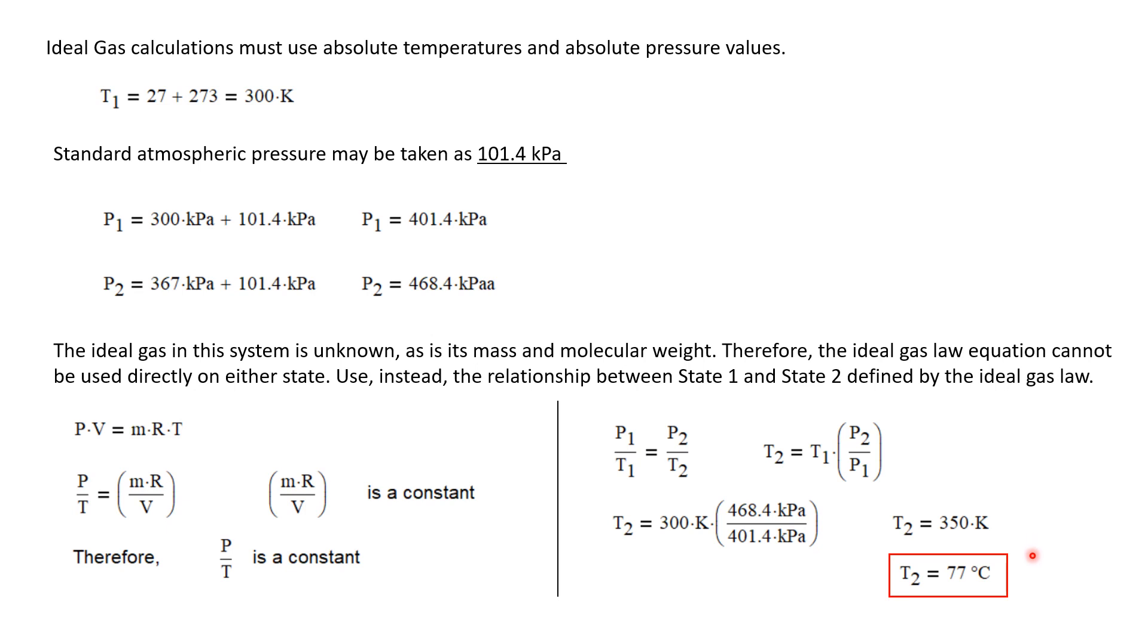But we were asked to solve the problem in degree C, so I'll subtract 273. The temptation here is to solve this equation looking for T2 in degree C by putting T1 in degree C. And because the gauge pressures were given, it's easy to just go ahead and plug gauge pressures in here. Well, degree C and gauge pressures will not work. You must use absolute temperatures and absolute pressures when dealing with ideal gas law.